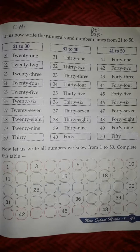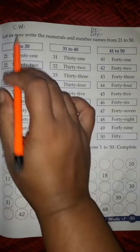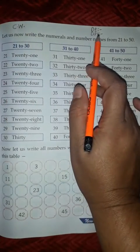Take out your math book and turn to page number 99. Write down C.W. and then D.D.